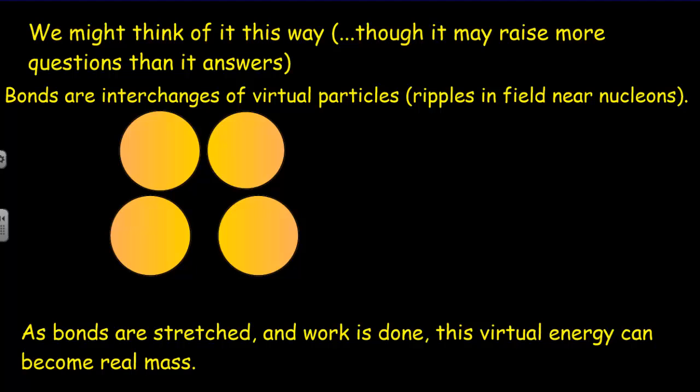In order to give a physical explanation as to how this bonding energy becomes mass, in the standard model, the bonds between nucleons, the strong nuclear bonds are caused by interchanges of virtual particles. So the virtual particles don't have any mass, but they're creating the bond. And then as we separate the nucleons apart a bit, some of those particles with virtual mass, they become real mass and part of the mass of the nucleons here. So as the bonds are stretched and work is done, this virtual energy becomes real mass.